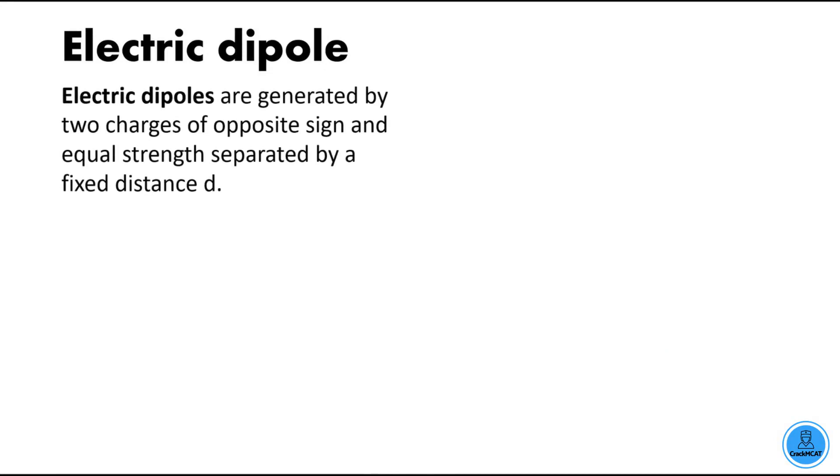Electric dipoles are two charges that have opposite sign but equal strength. They're separated by a fixed distance d. So they come as a set, positive and negative charges together.